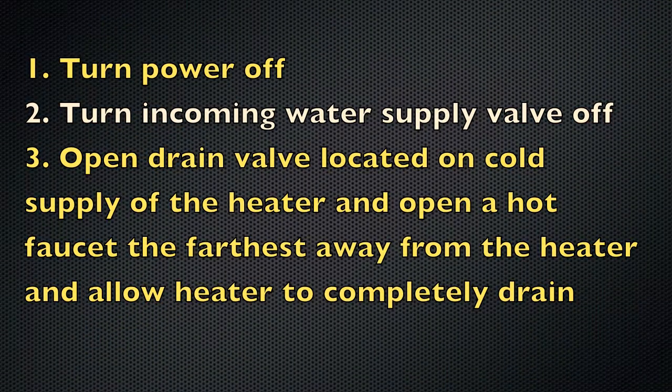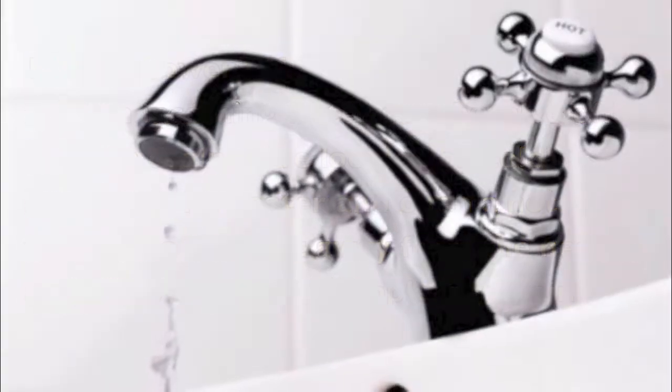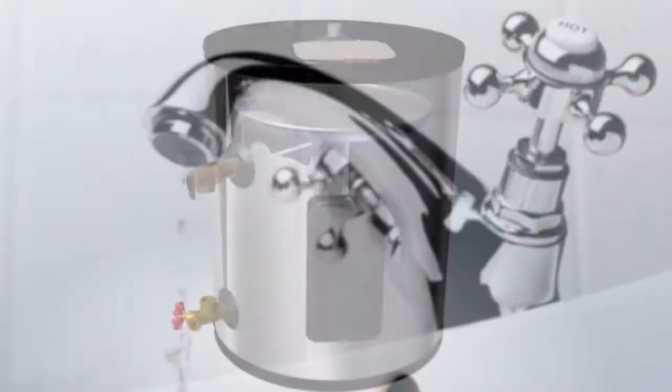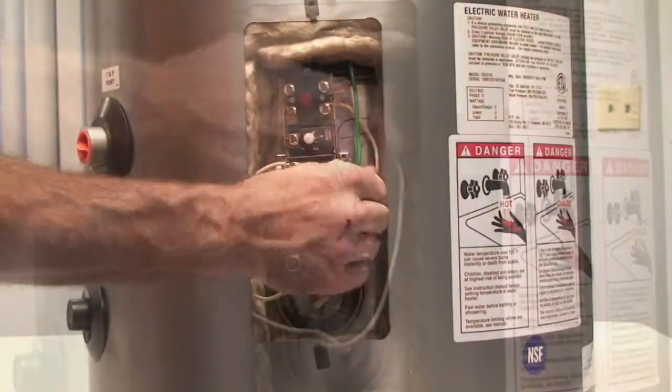Open drain valve located on cold supply of the water heater and open a hot faucet at the farthest point from the heater. Allow heater to completely drain. Next, disconnect wires from the combination ECO thermostat.